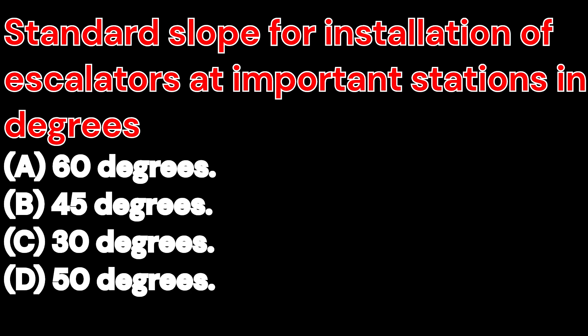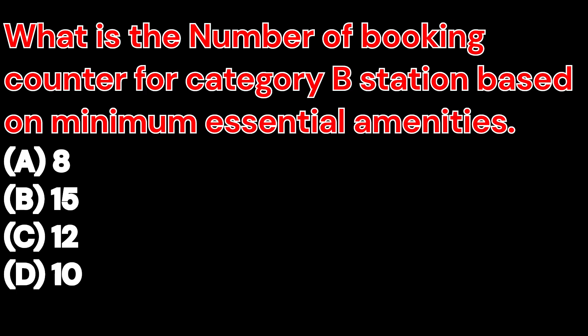What is the number of booking counters for a Category B station based on minimum essential amenities? A. 8. B. 15. C. 12. D. 10. And the right answer is 10.